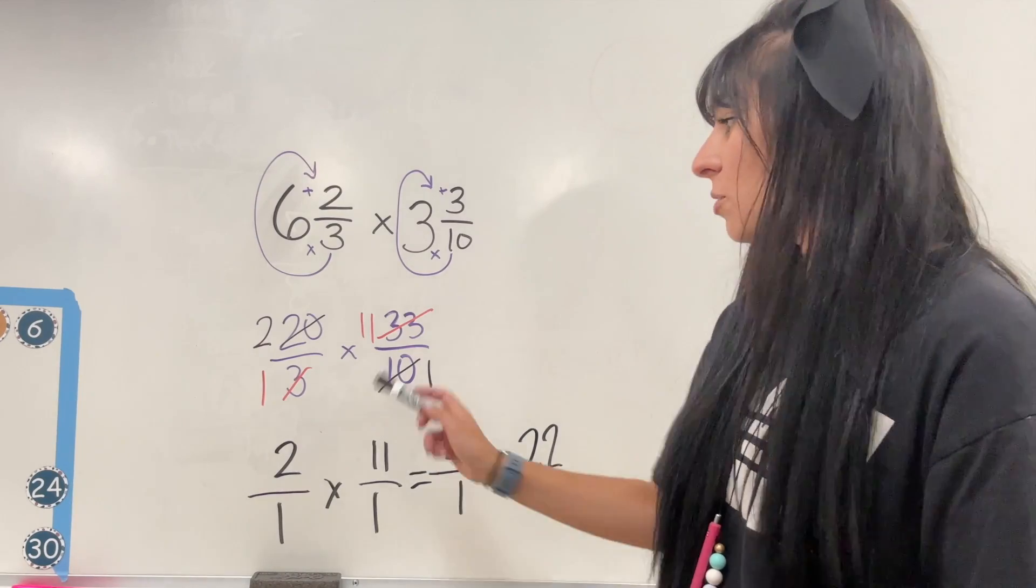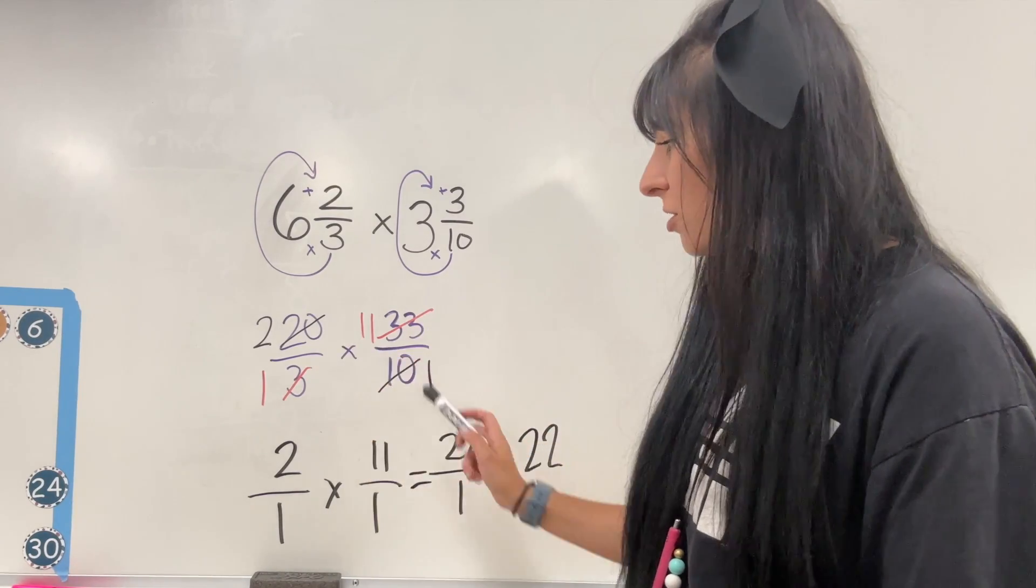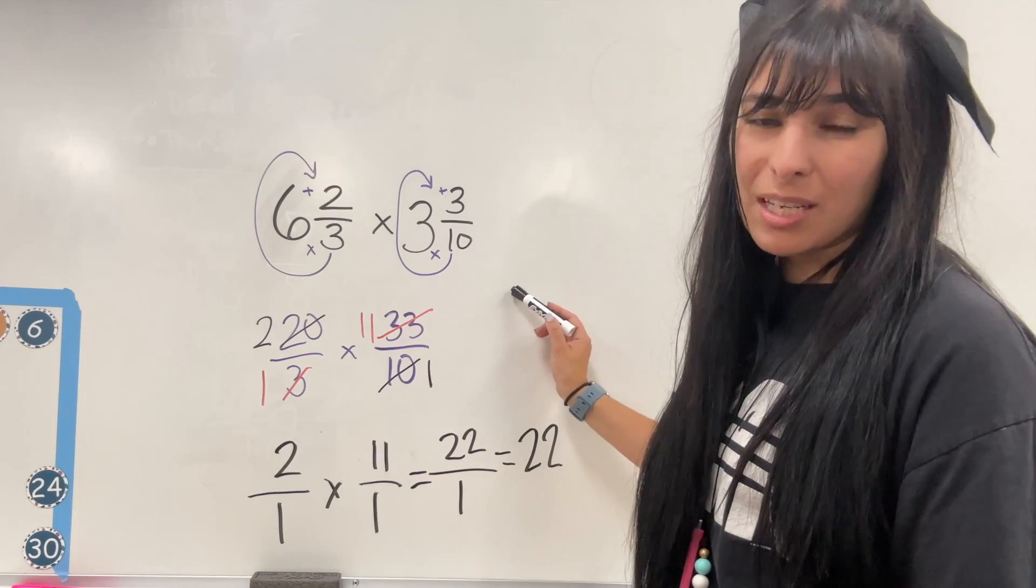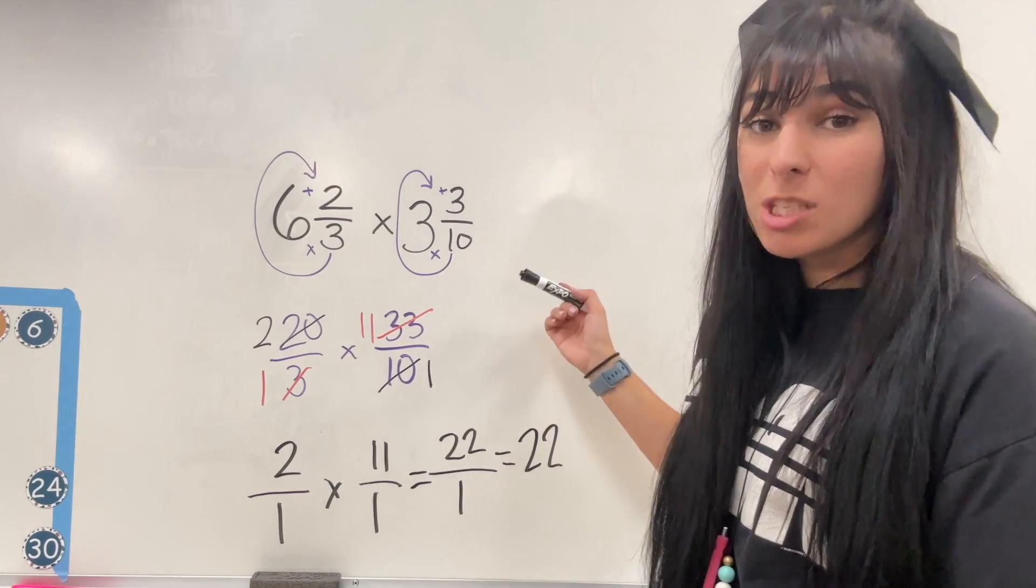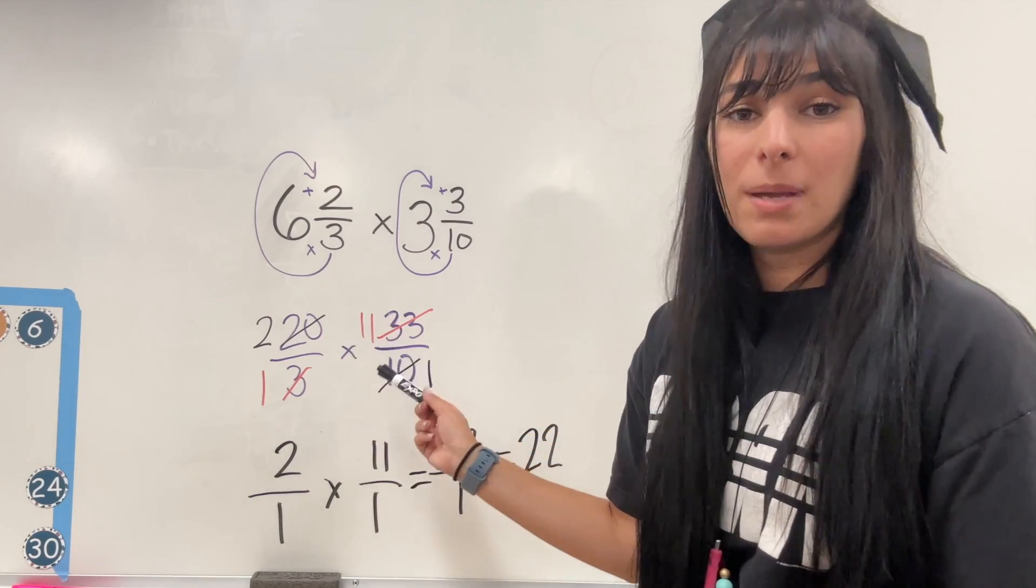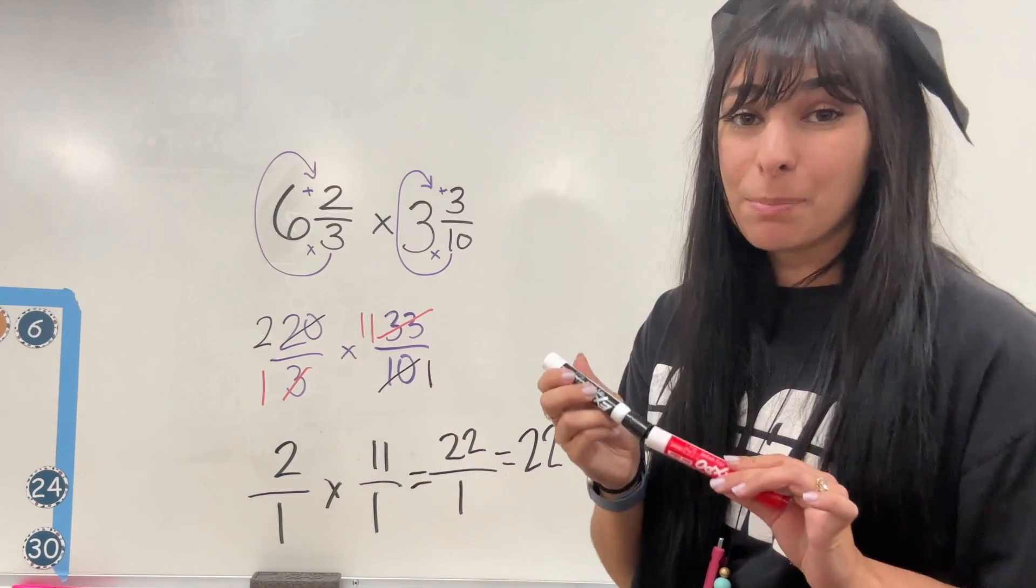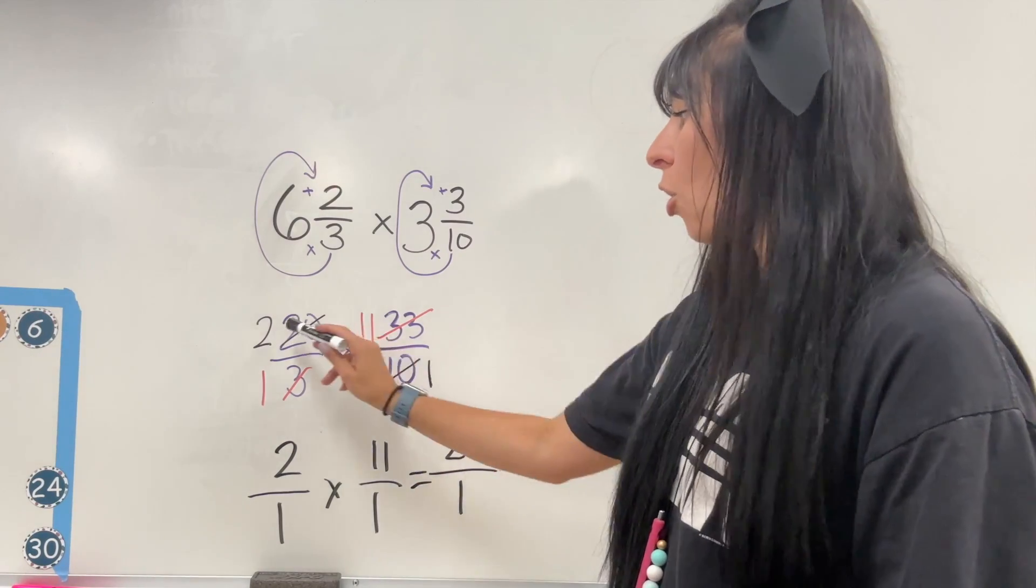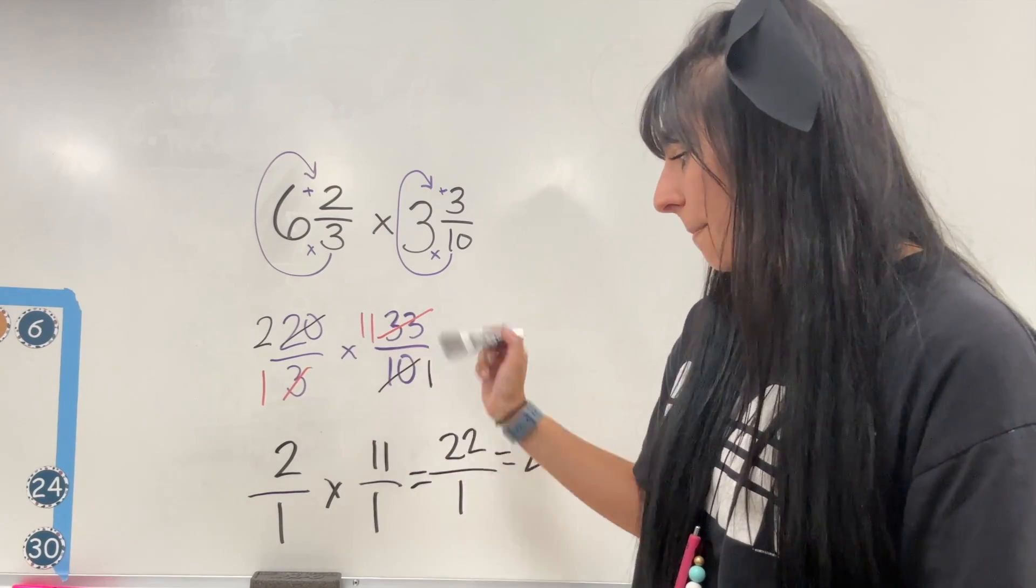Now, if you did not want to simplify across first, you can multiply these, you're just going to get really big numbers. And from there you will simplify and you'll end up getting the same thing. But when you're multiplying two really big numbers, most likely you can simplify across. Now it is always across that they have to match up.